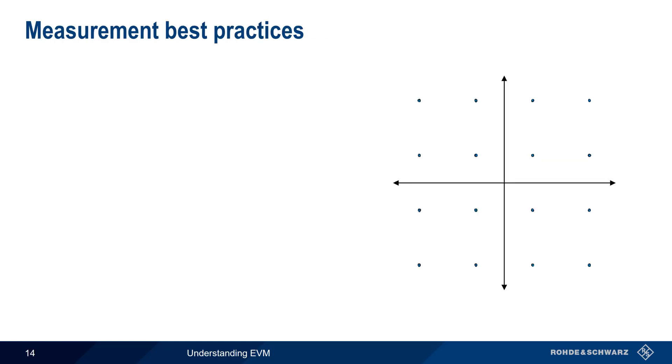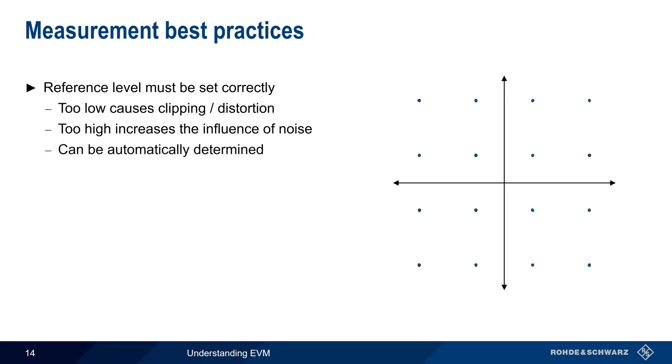There are numerous recommended or best practices when measuring EVM. The first of these is to ensure that the reference level is set correctly, in order to have a good signal-to-noise ratio. As we've already discussed, if the reference level is set too low, the signal may be clipped, leading to distortion. Too high of a reference level will increase the influence of noise and raise EVM as well. In many cases, analyzers may have an auto-EVM routine that automatically determines the optimum reference level for an EVM measurement.